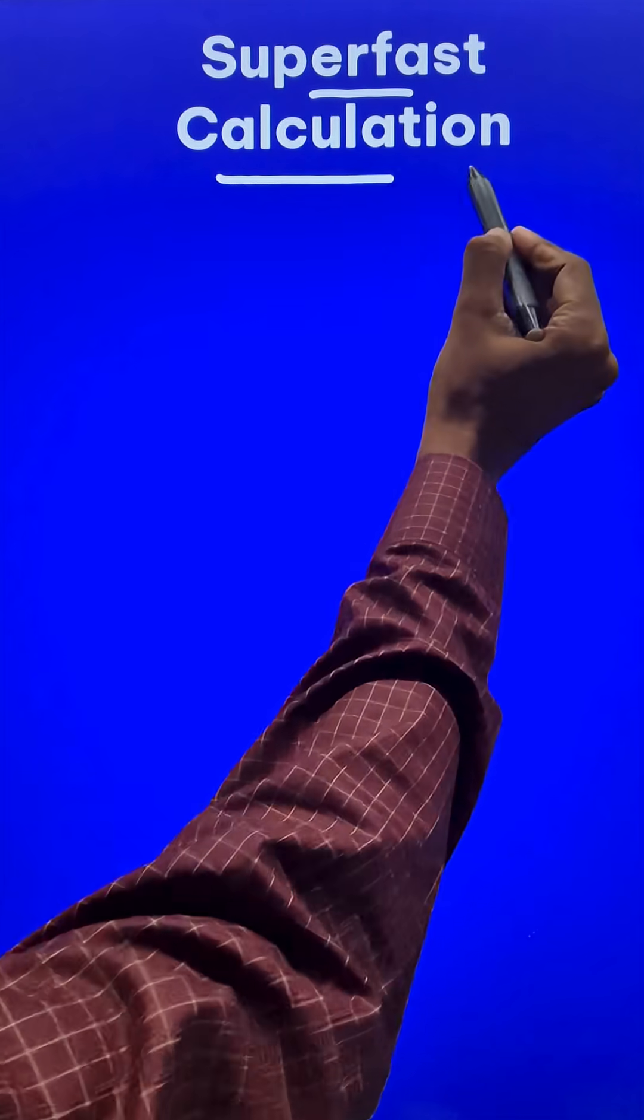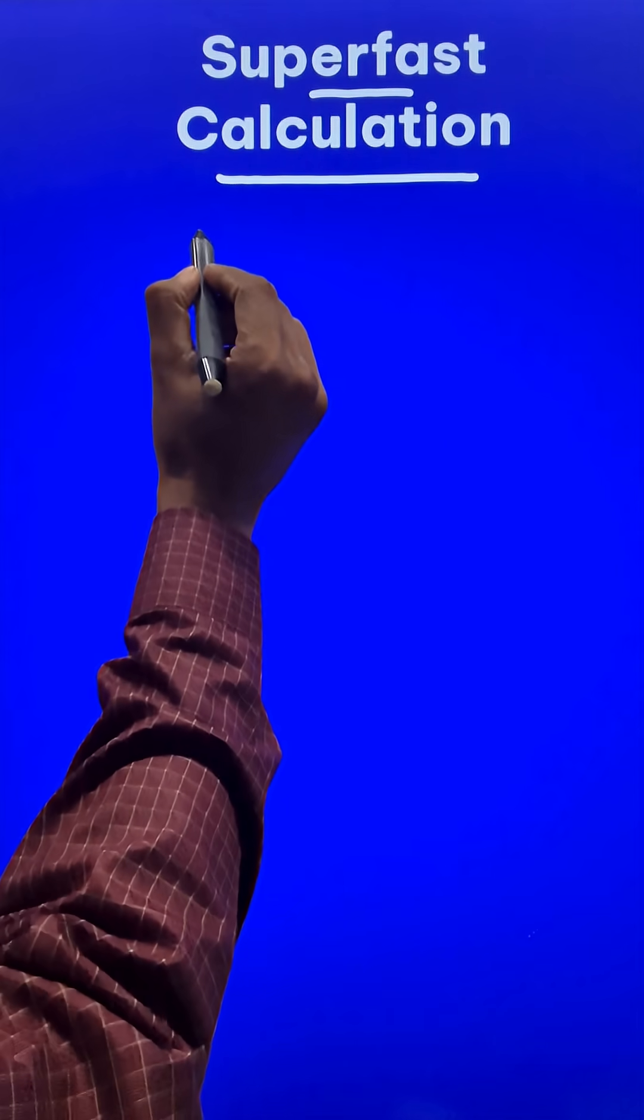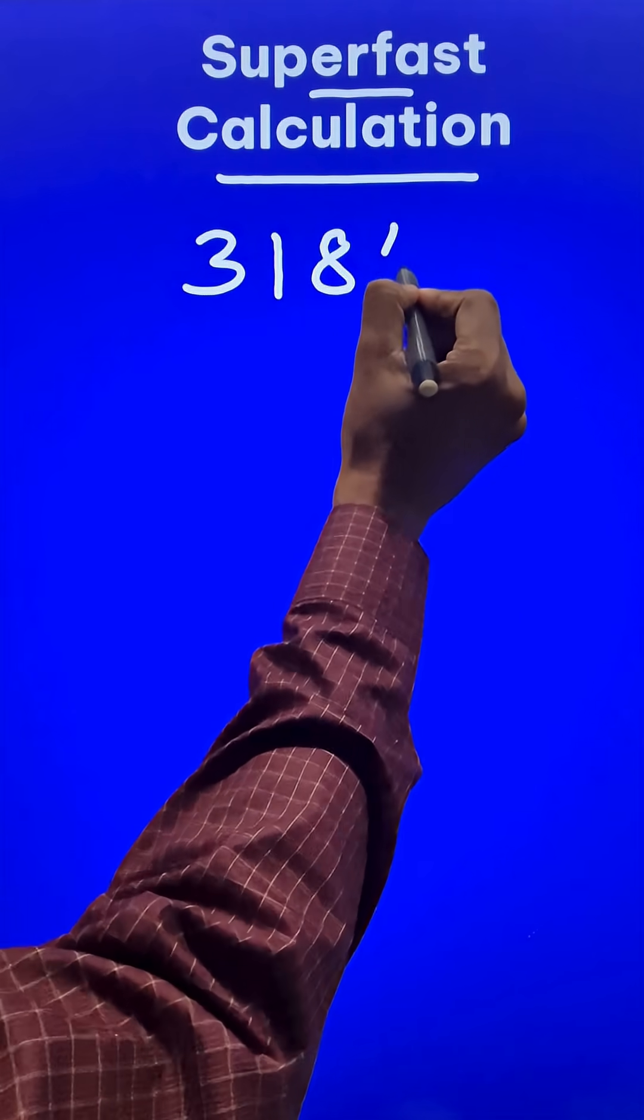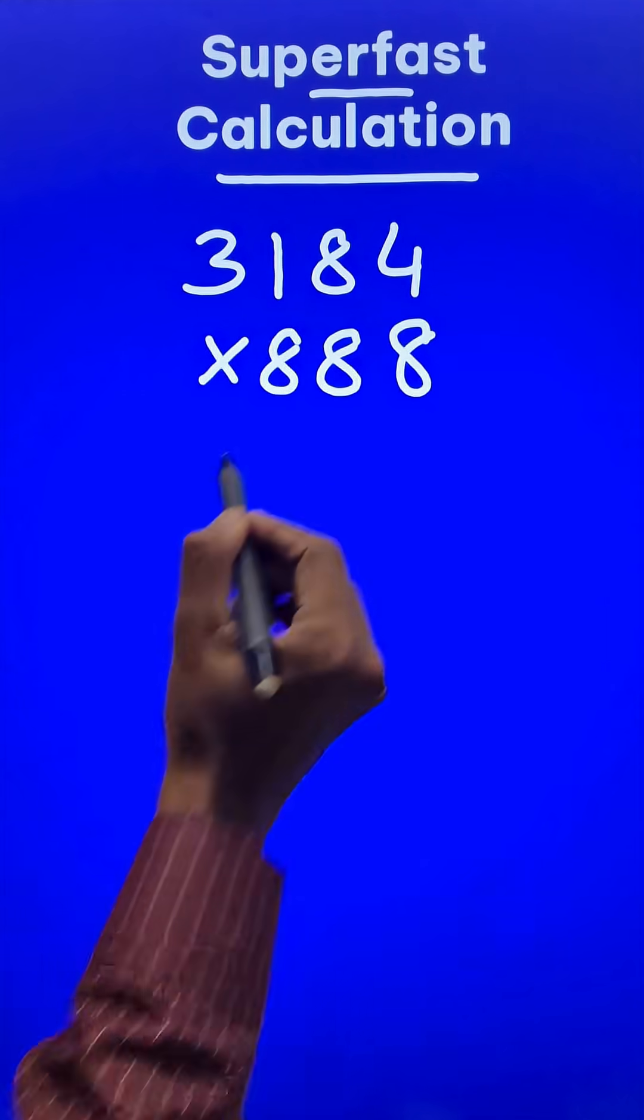Here is a super fast calculation trick. Suppose you need to do 3,184 and you need to multiply that by a triplet like 888.